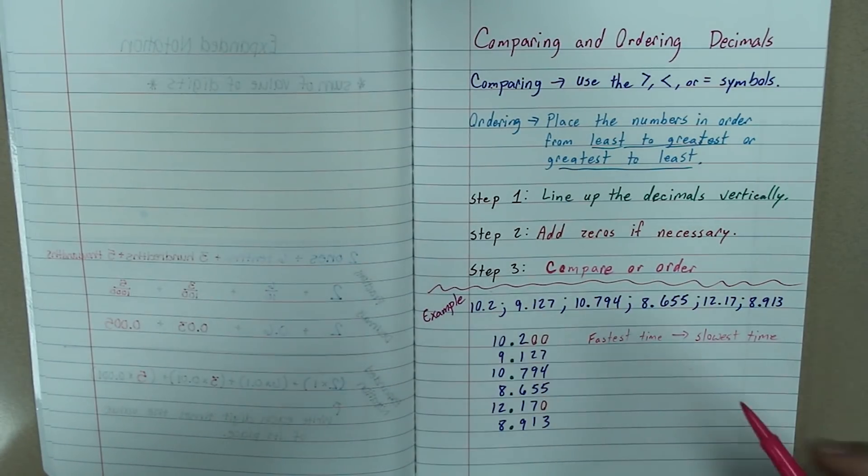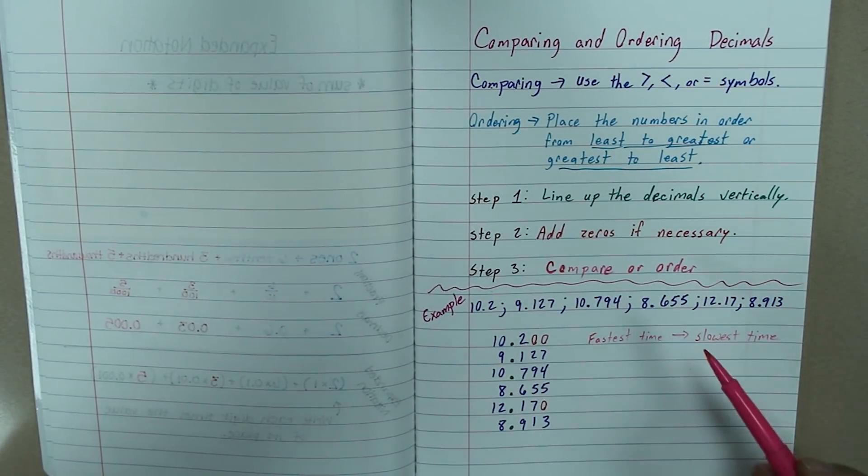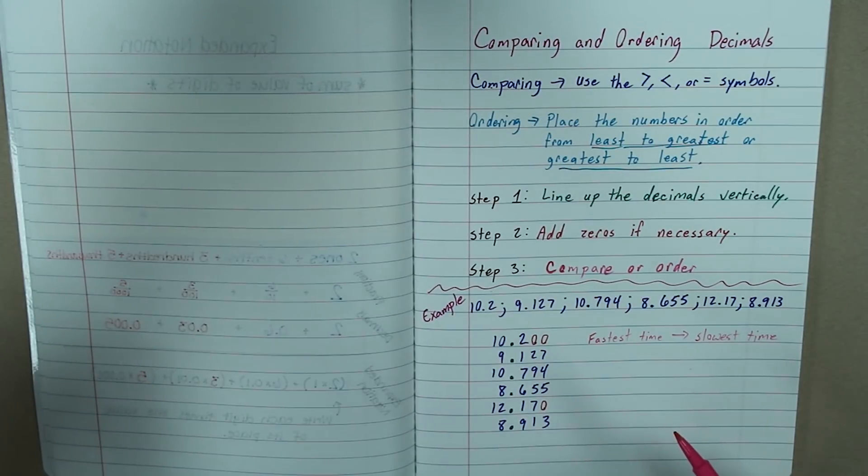So, you have to really think. If we are going from fastest time to slowest time, what are we actually looking for? If I am thinking about the race, the person who finished first, which was me, the person who finished first, is the number going to be smaller or is it going to be larger?